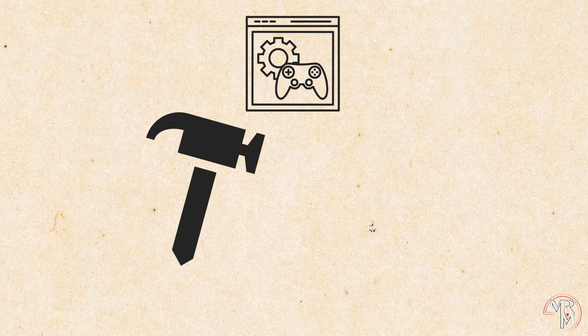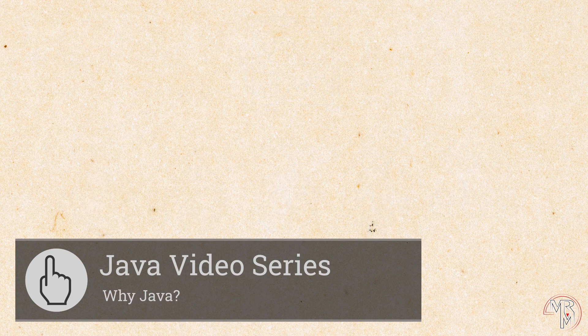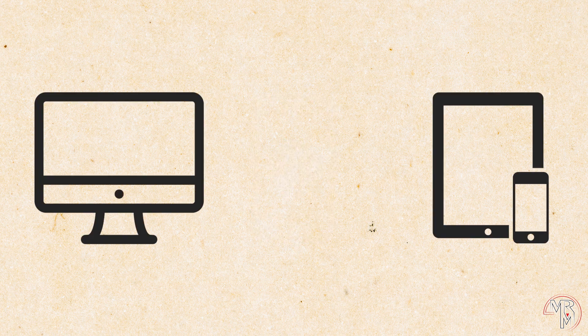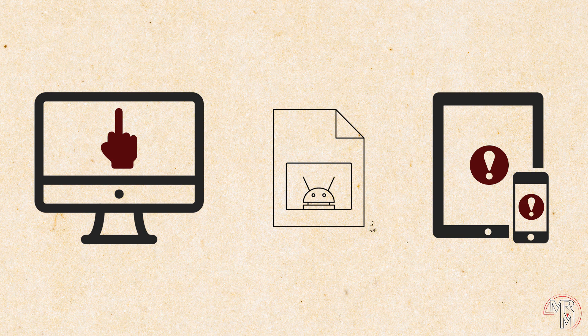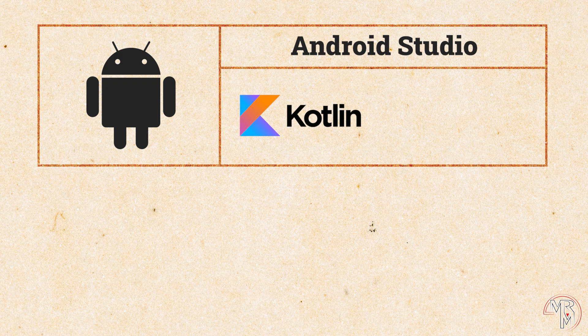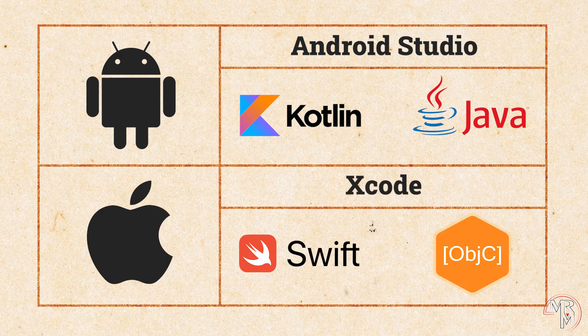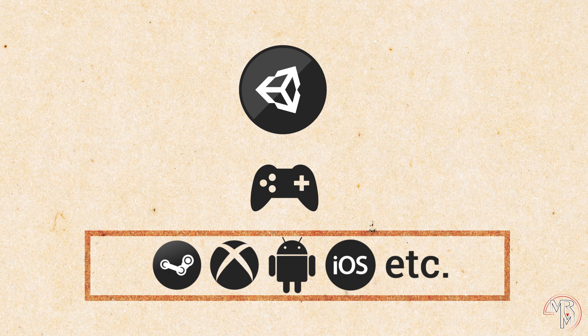Game engines also help you build your games to various platforms. To have a game run, for example, on Android devices, we need to compile it for Android. But a game compiled for Android will not run on an iOS device or a Mac. Native Android development is done in Android Studio using Kotlin or Java, while native iOS and Mac development are done in Xcode in the Swift or Objective-C languages. A game engine like Unity allows you to create a game once and build it for multiple platforms without rewriting the code or switching IDEs — well, for the most part, unfortunately.